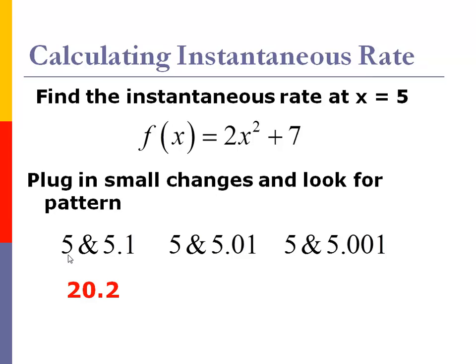So what happens to my slope as I use x values that get closer and closer to 5. When I got my slope between 5 and 5.1, I got 20.2. When I calculated my slope between 5 and 5.01, I got 20.02. And then when I did 5 and 5.001, I got 20.002. And so I'm looking at this, I'm stepping back and going, hey, is there a pattern here? And hopefully you can see the pattern.